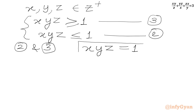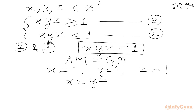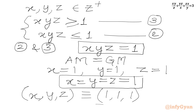Only equality will hold true, and this happens when AM equals GM. So our conclusion is x = 1, y = 1, z = 1. Or we can write x = y = z = 1. The only ordered triplet is (1, 1, 1).